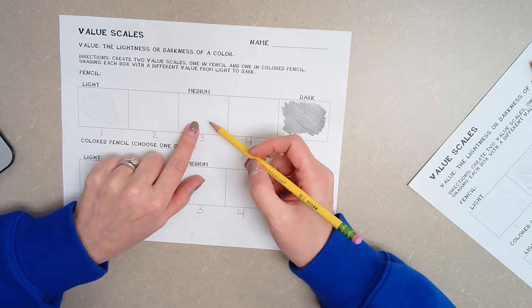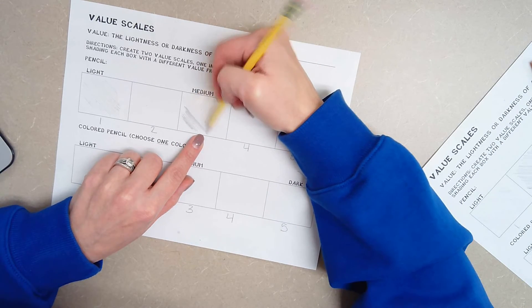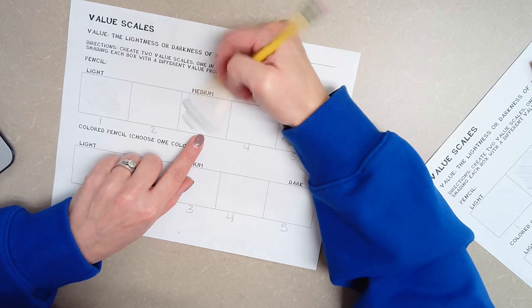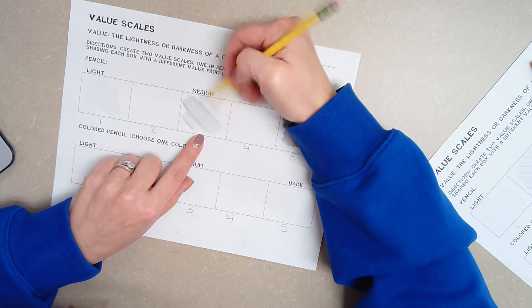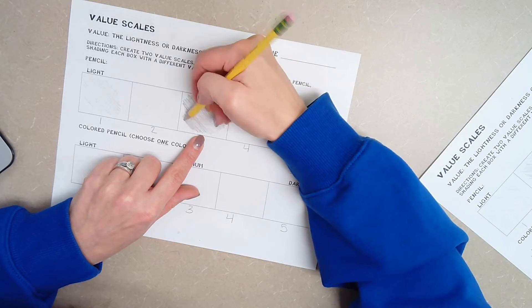In the middle, this is just how you would normally color something in, just like a medium pressure. Not too hard, but not too soft. Just a medium pressure.